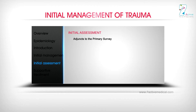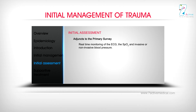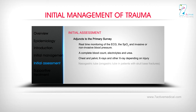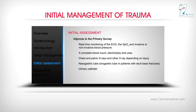Adjuncts to the primary survey include: real-time monitoring of the ECG, SpO2, and invasive or non-invasive blood pressure; a complete blood count, electrolytes, and urea; chest and pelvic x-rays and other x-rays depending on injury; a nasogastric tube or orogastric tube in patients with skull base fractures; a urinary catheter; and a central venous catheter.